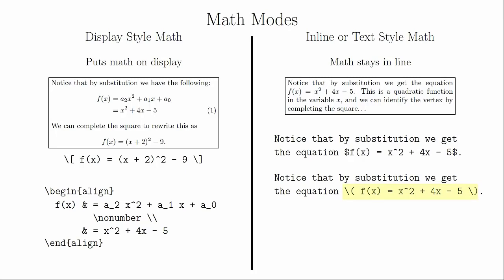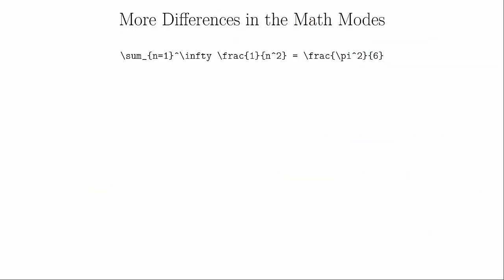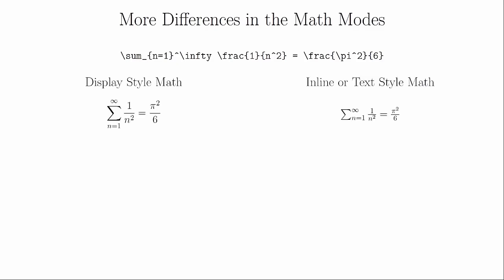Ultimately it makes very little difference. Whenever you are talking about a mathematical variable, you should be in inline math mode. Notice that your variables are italicized in math mode — this helps to visually distinguish them as mathematical variables and not just letters of the alphabet. Inline and display-style mathematics are also presented differently. The display-style mode is larger and the notation is stacked more vertically, while the inline mode is smaller and stacked more horizontally. You can also see that the fractions are sized differently.